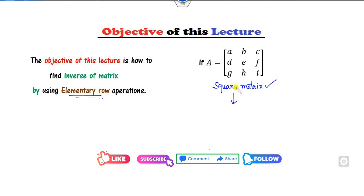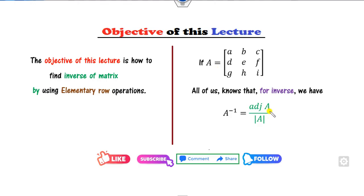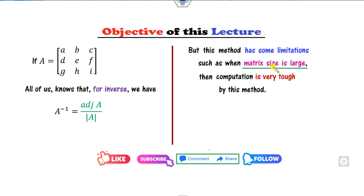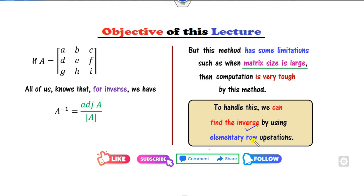We all know that for a square matrix you can find the inverse using the adjoint of A divided by the determinant. But this method has certain limitations — if your matrix size is 5×5, 7×7, or 8×8, it is very difficult to find the determinant. The computation becomes very tough by this method. So in order to overcome this, we will find the inverse by using elementary row operations, which is applicable whether your matrix is 7×7 or 10×10.